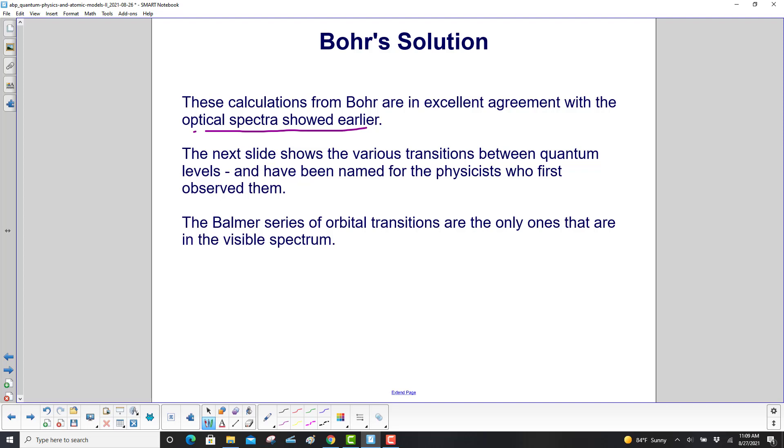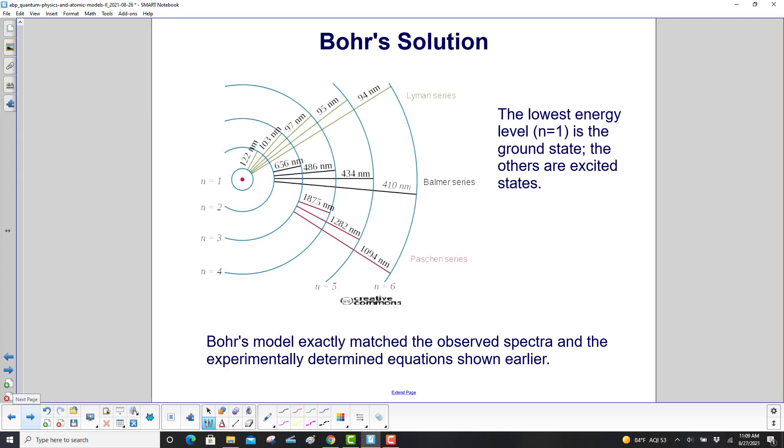So, our next slide will show the various transitions between quantum levels, and they've been named for the physicists who first observed them. The Balmer series of orbital transitions are the only ones that are in the visible spectrum, and we've seen that already, but now we're showing the same thing, matching it up with Bohr. The lowest energy level, which is here, n equals 1, and that little red dot, that's the nucleus, that's the ground state. The others are excited states.